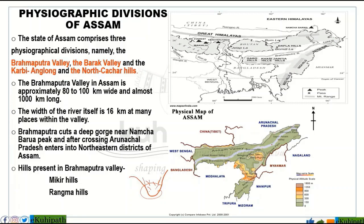The slope of the Brahmaputra Valley is very significant. In the upper region the slope is around 17 cm per kilometer, and further along it is around 13 cm per kilometer.